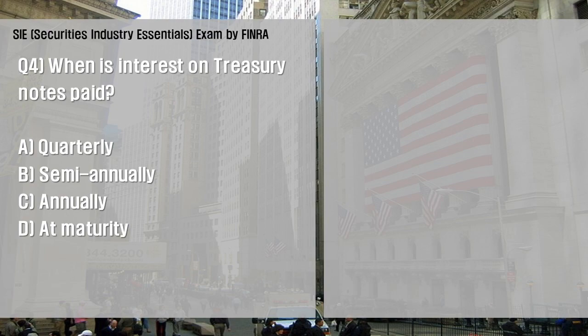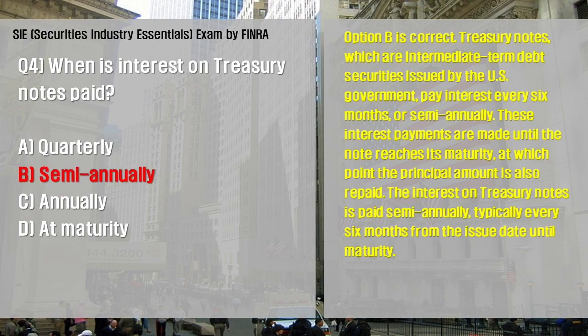Option B is correct. Treasury notes, which are intermediate-term debt securities issued by the U.S. government, pay interest every six months, or semi-annually. These interest payments are made until the note reaches its maturity, at which point the principal amount is also repaid. The interest on Treasury notes is paid semi-annually, typically every six months from the issue date until maturity.